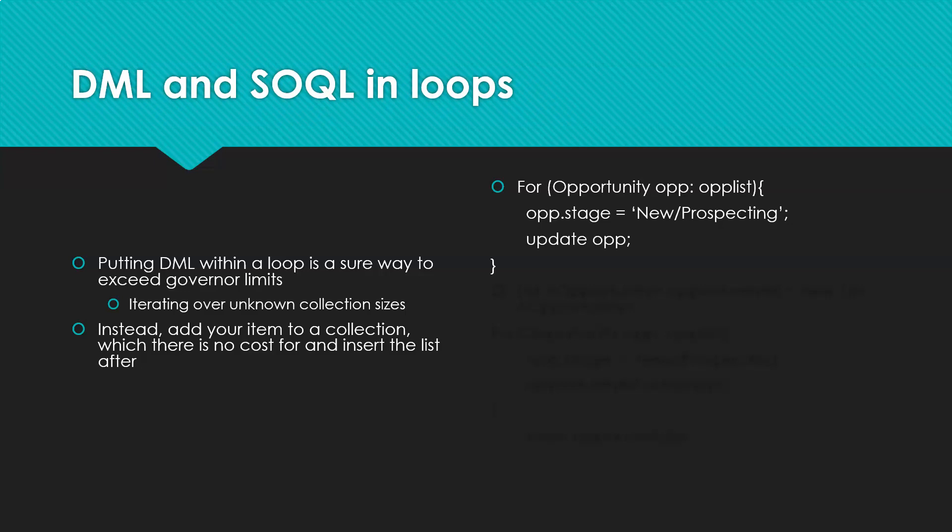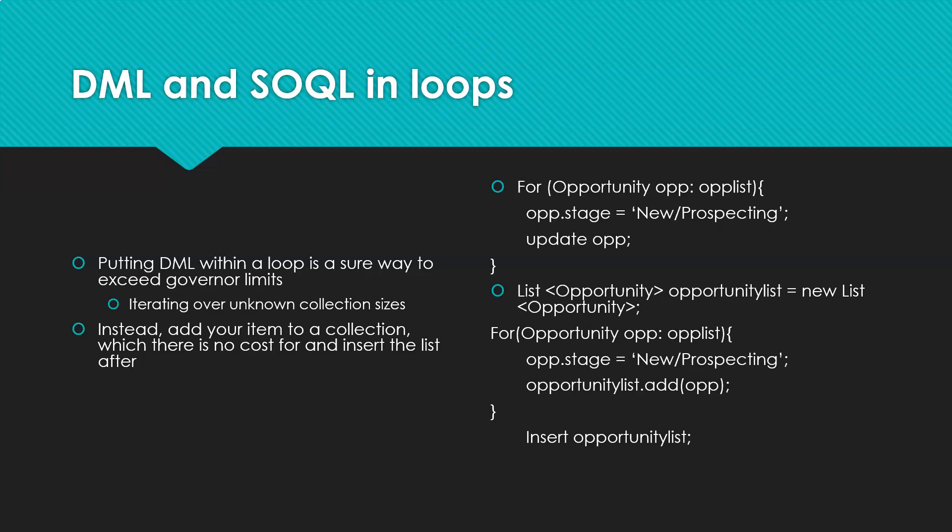You can see in this code I have a for loop for opportunities. I'm iterating through an opportunity list called 'op list,' changing the stage to 'New Prospecting,' and updating the opportunity right then and there. So if there are 500 or 1,000 opportunities in that list, I'm doing an equal number of updates. We know there are governor limits regarding DML, so the bigger the list, the more likely you'll run up against them.